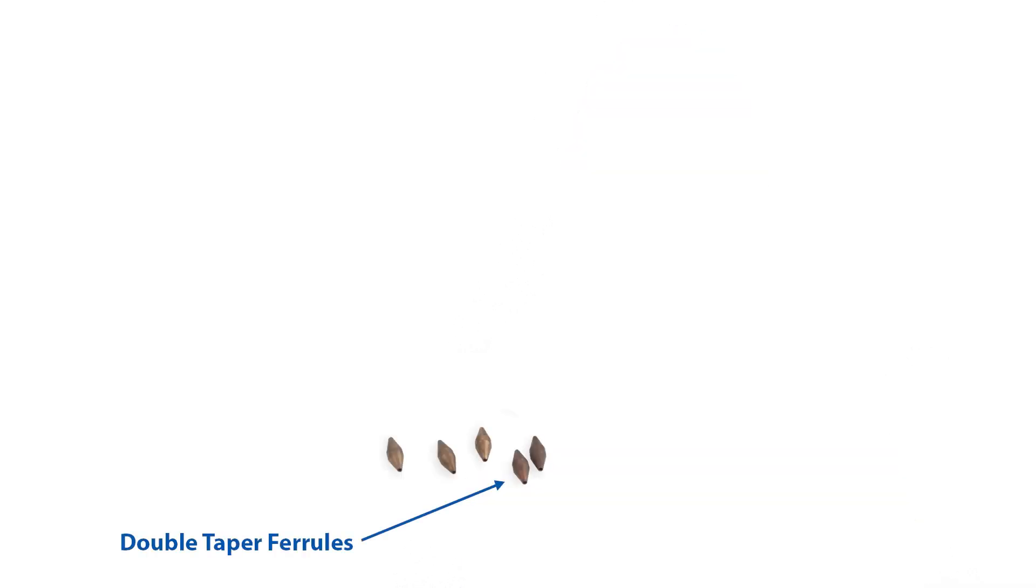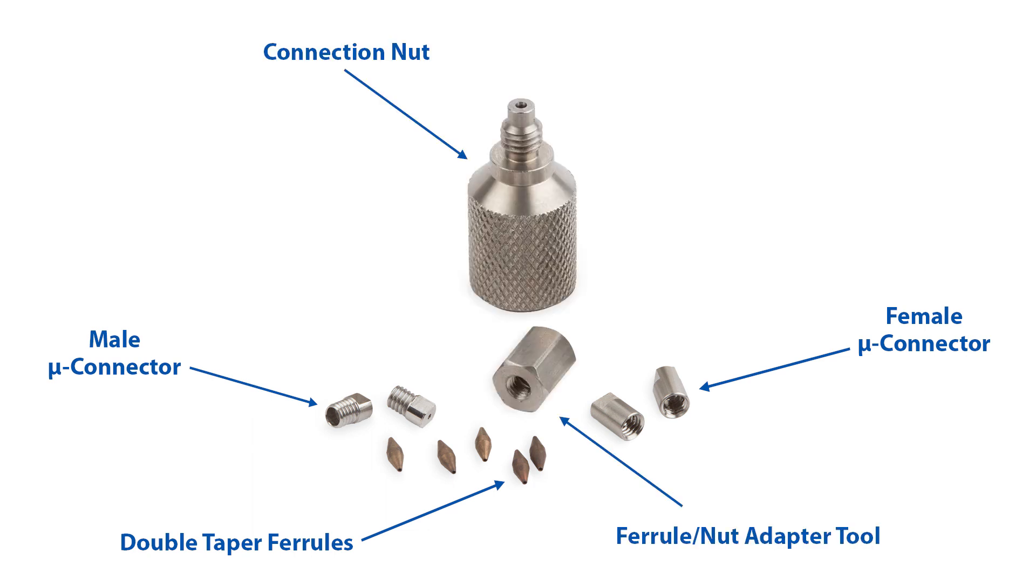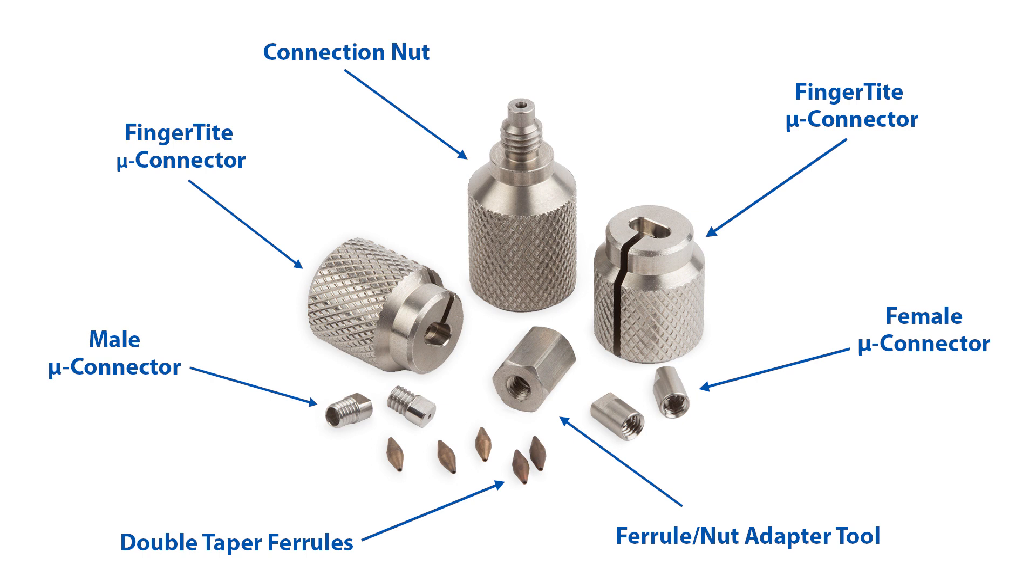First, let's take a look at the individual parts. Here we have the double taper ferrule and the male and female micro connector end fittings. Keep in mind the exact dimensions of the ferrules will need to correspond to your column's IDs, whether they vary or are both the same. The kit also includes a ferrule adapter tool with connection nut and two finger-tight micro connector end fitting tools.